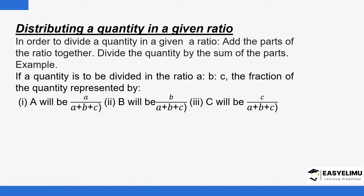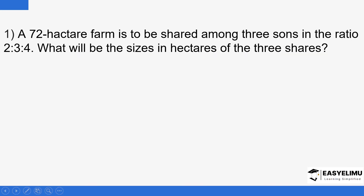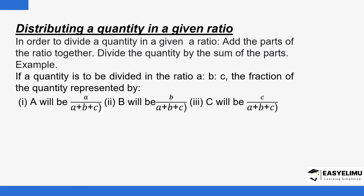The fraction of the quantity will be represented as follows: the first part will be represented by a divided by the sum (a+b+c), the second part by b over the sum, and the third part by c over the sum. For example, if you have 20 and you want to divide it in the ratio 1 to 2 to 7...